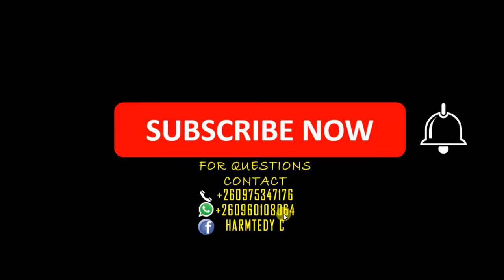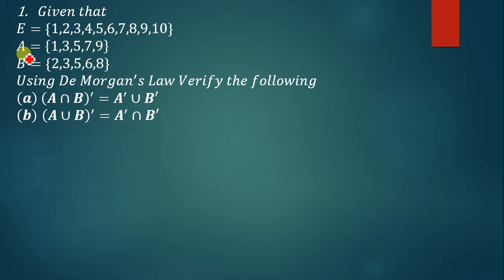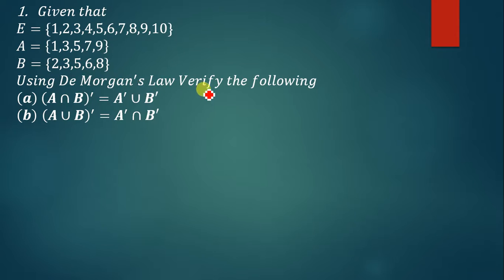Let's quickly start solving. The question says: given that E, which is the universal set, is {1, 2, 3, 4, 5, 6, 7, 8, 9, 10}, and we have been given two other sets, set A and set B, and they are asking us to use De Morgan's Law to verify the following. This is a very simple question.